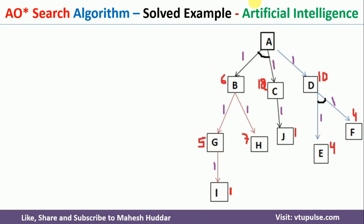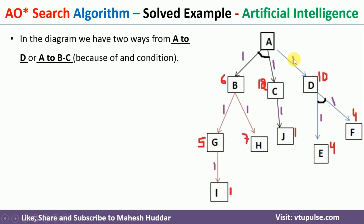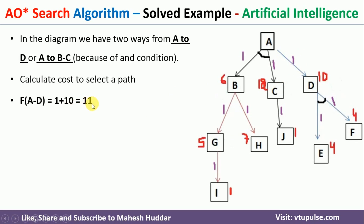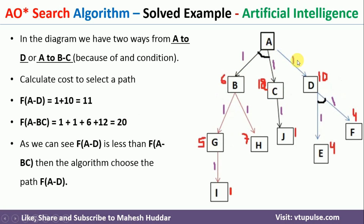Consider the path A to D: f(A→D) = 1 + 10 = 11. Now for the AND path, f(A→B,C) = 1 + 6 + 1 + 12 = 20. So we get 11 on the D side and 20 on the B,C side. Between these two, the A→D path has the smallest cost, so at this point it is better to select the path from A to D.